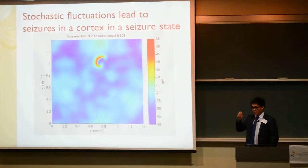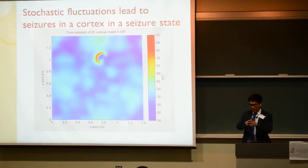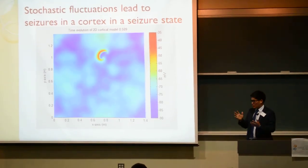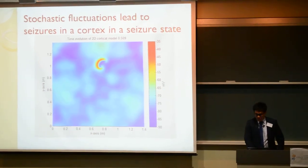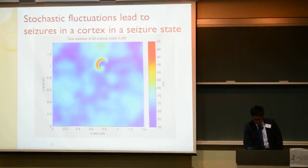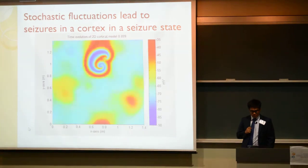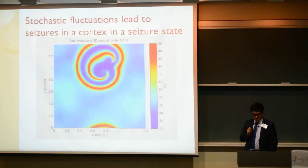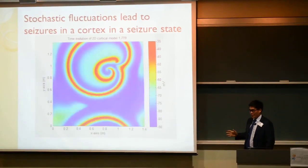In two dimensions, you can model the brain as a flat plane, and let it run from equilibrium and see what happens. What's really interesting is that the waves are actually in spirals — you can see them spiraling out over time. So basically, these are seizures, and we don't want these things to happen.